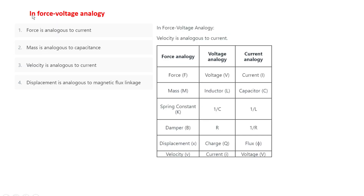The next question: in force-voltage analogy, we can see the force analogy, voltage analogy, and current analogy. In force-voltage analogy, velocity is analogous to current. So option 3 — velocity is analogous to current — is correct.